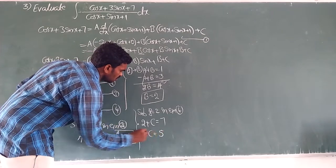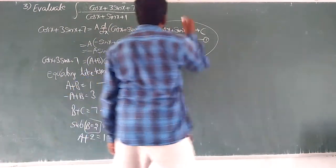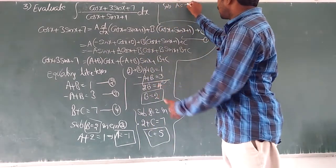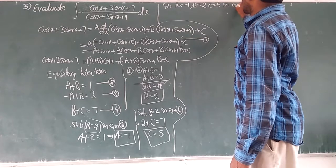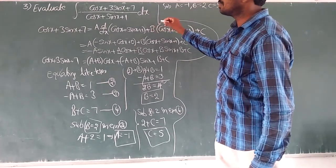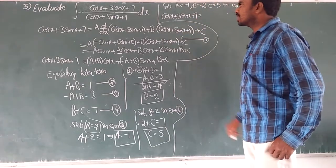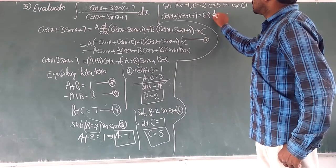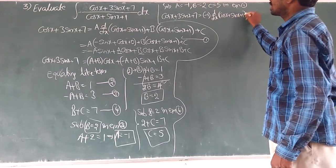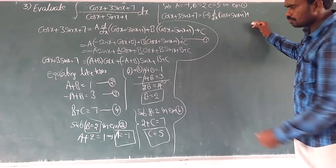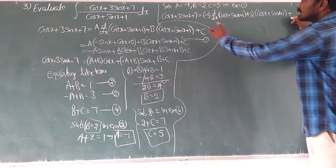Adding equations 2 and 3: A and −A cancel, giving 2B = 4, so B = 2. Substituting B = 2 into equation 2: A + 2 = 1, so A = −1. Substituting B = 2 into equation 4: 2 + C = 7, so C = 5. We got all three values: A = −1, B = 2, C = 5.